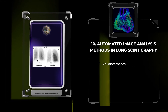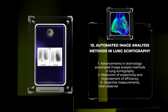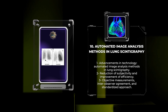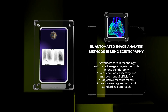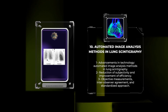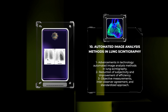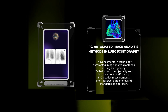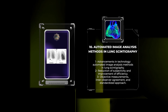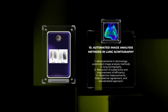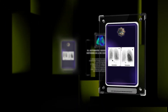Advancements in technology have paved the way for automated image analysis methods in lung scintigraphy, reducing subjectivity and improving efficiency. By employing sophisticated algorithms, radiologists can extract quantitative data from scintigraphic images automatically. These automated methods enable objective measurements, facilitate inter-observer agreement, and enhance the accuracy of lung scintigraphy interpretation. They also have the potential to further streamline workflow, reduce reporting time, and contribute to a more standardized and evidence-based approach in clinical practice.